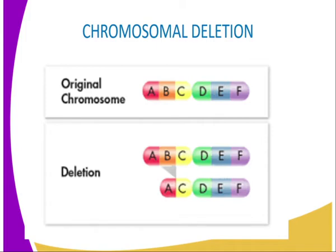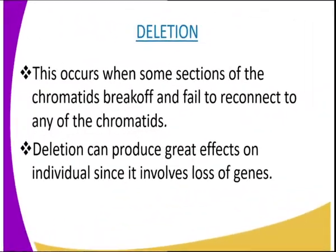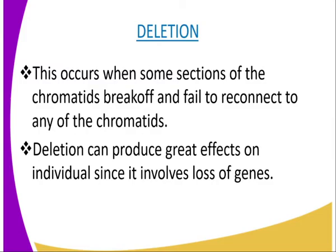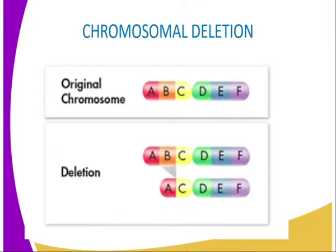In this case, these sections are completely lost and the genetic material they contain is said to be deleted. Deletion can produce great effects on an individual since it involves loss of genes. Both the structure and the development of the individual can be closely interfered with. Indeed, most deletions are lethal since the offspring may lose genes responsible for the synthesis of some vital protein molecules. As you can see from our diagrammatic presentation, the original chromosome has a gene B, but after deletion, B has been lost. That is what we define as deletion.